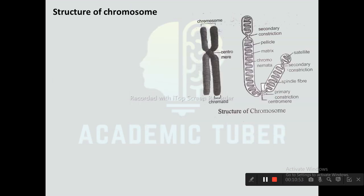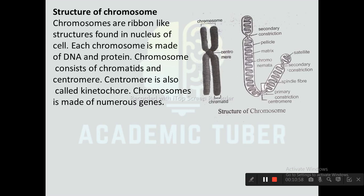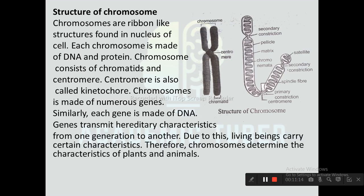DNA is the same structure as chromosomes. Chromosomes are ribbon-like structures found in the nucleus of cells. Each chromosome is made of DNA and protein. A chromosome consists of chromatids and a centromere. The centromere is also called the kinetochore. Chromosomes are made of numerous genes, and each gene is made of DNA. Genes transmit hereditary characteristics from one generation to another, so chromosomes determine the characteristics of plants and animals.